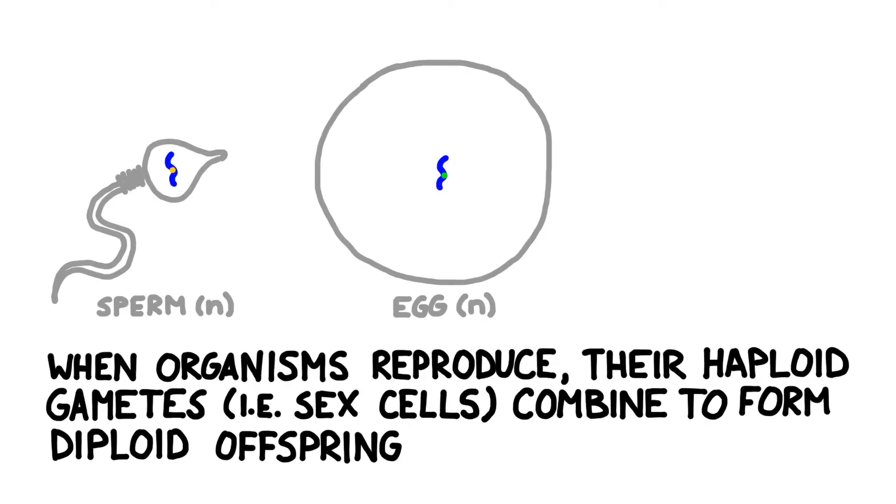When organisms reproduce, their haploid gametes, i.e. their sex cells, combine to form diploid offspring. Since the gametes carry the genetic information in their DNA, the offspring will inherit one set of genes from each parent. The resulting zygote is now diploid and has genetic information from both parents.